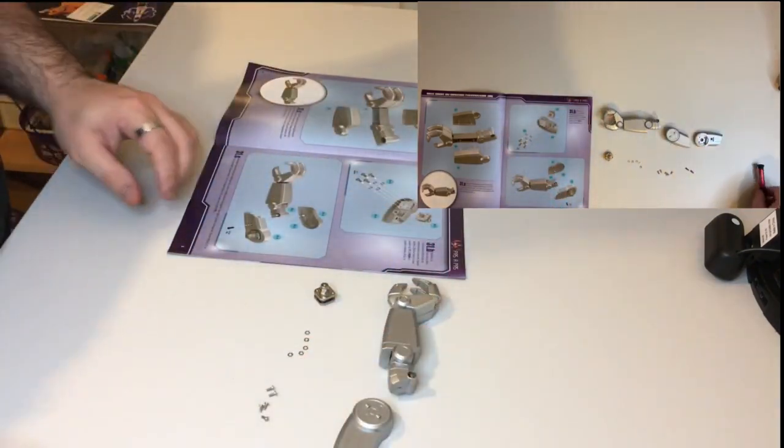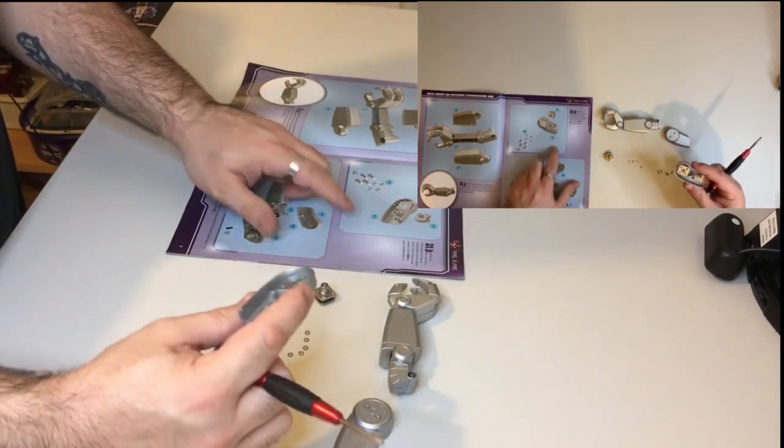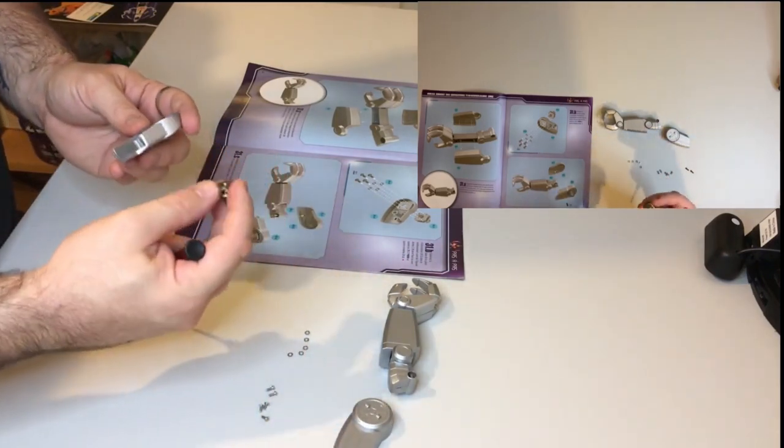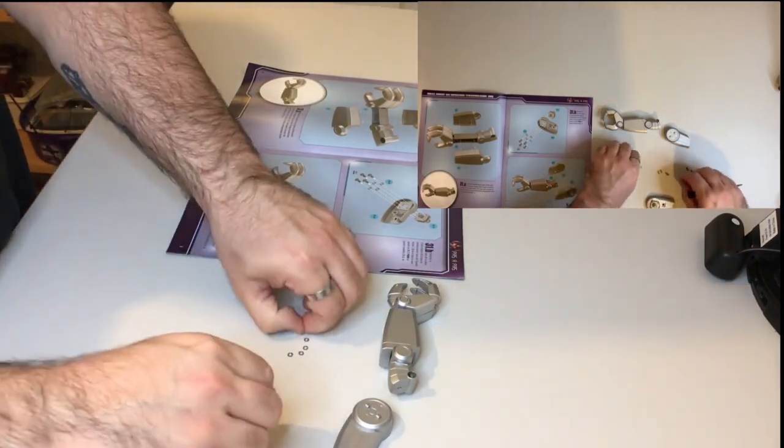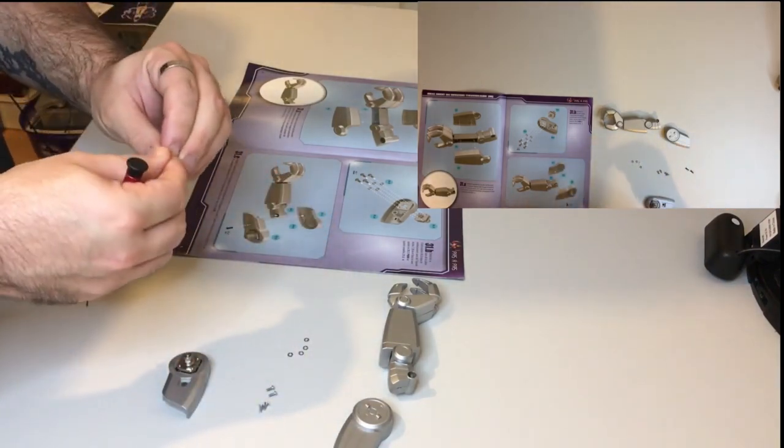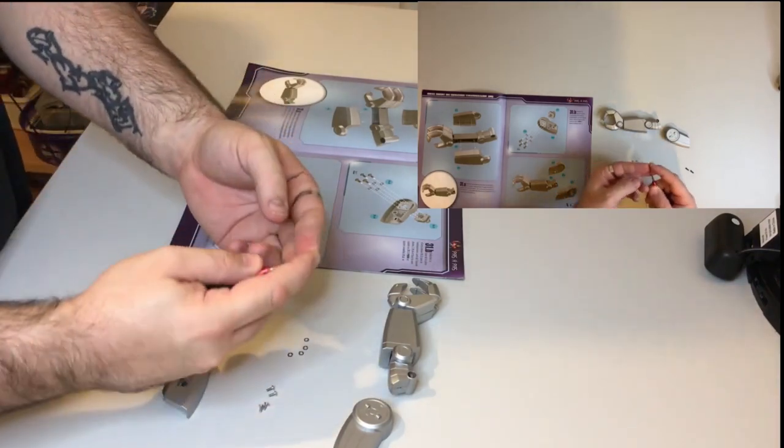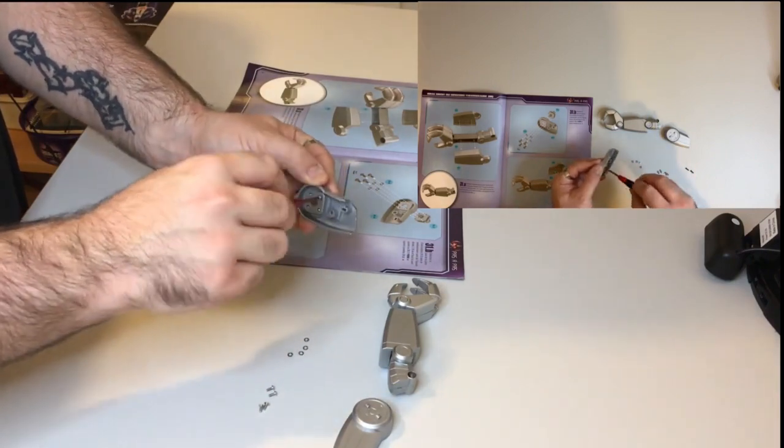So onto section B. What we're going to do is attach the shoulder pivot point 31.5 to 31.4 with some machine screws and washers. So grab that assembly. And here we go.